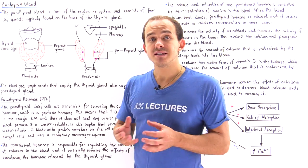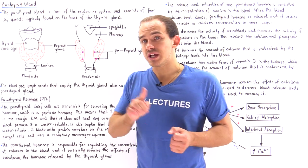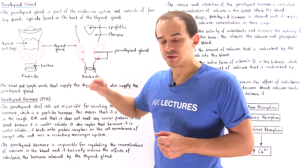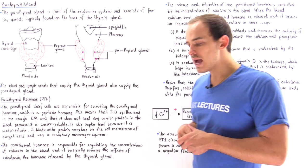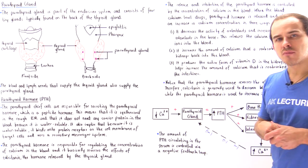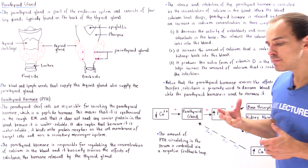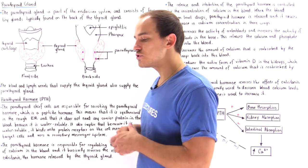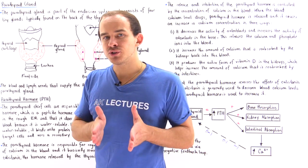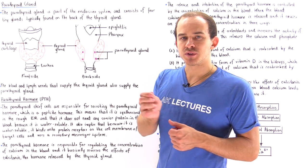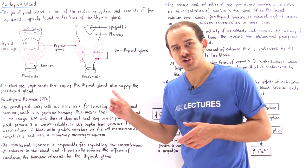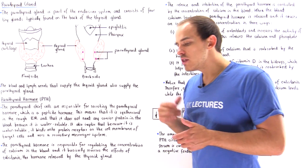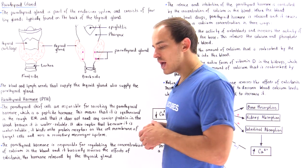These cells basically produce and secrete the parathyroid hormone. The parathyroid hormone is a peptide hormone, which means it is produced in the rough endoplasmic reticulum of the chief cells and then it is modified in the Golgi apparatus.